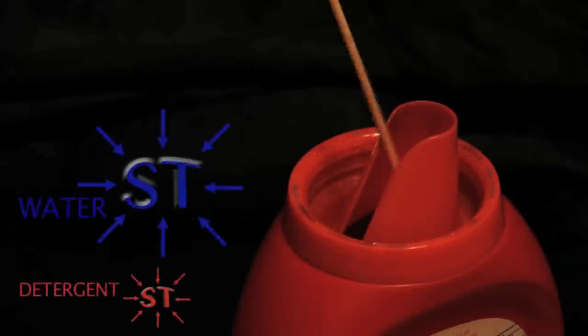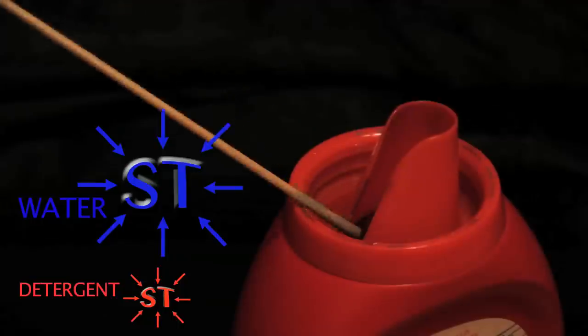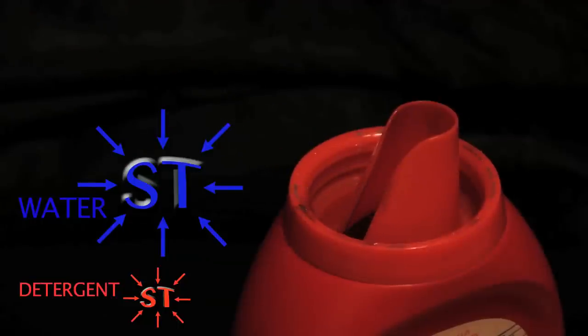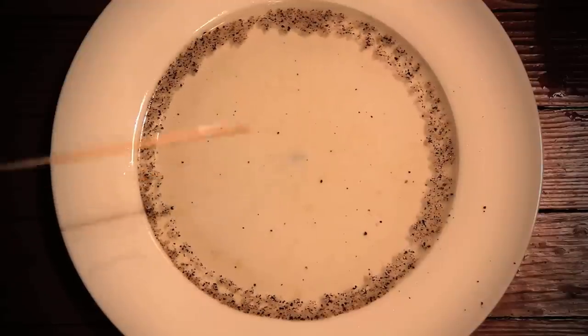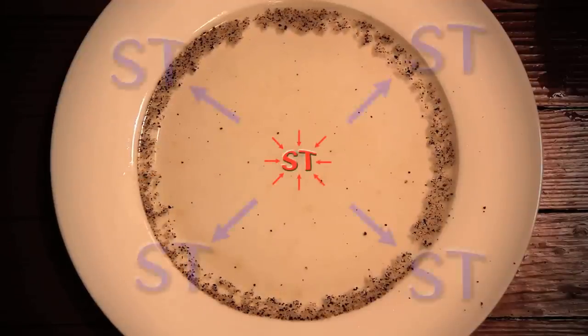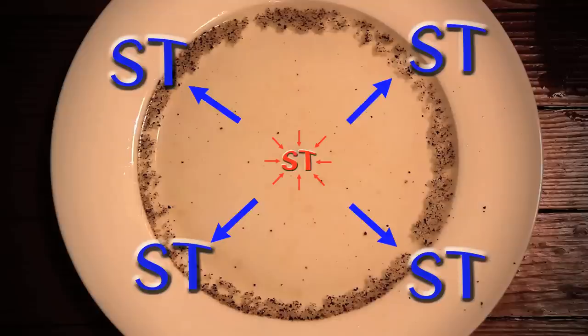But if we dip a stick in laundry detergent, which has a lower surface tension than water, and then touch the stick to the center of the plate, the pepper runs away. And it runs away because of the difference in surface tension. The higher surface tension water on the edge of the plate pulls harder than the detergent in the center.